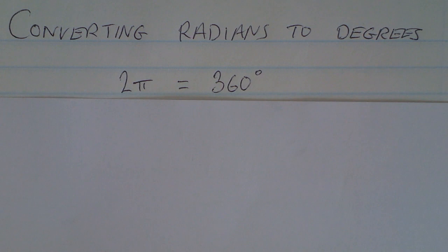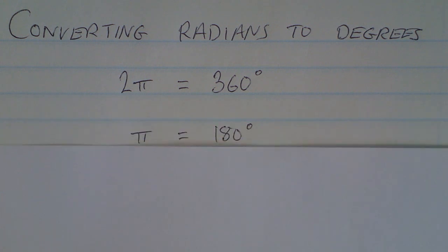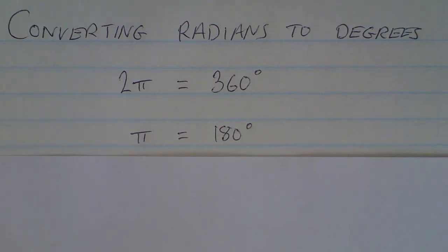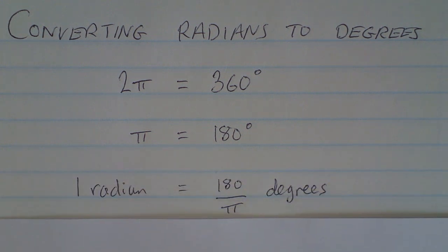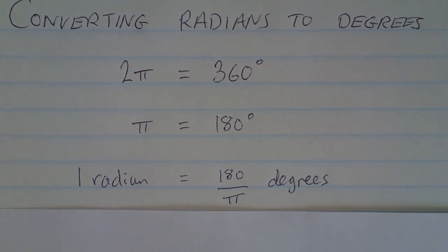As a reminder, we know that 2π radians is equivalent to 360 degrees, and therefore π is 180 degrees. That's π radians. So one radian equals 180 divided by π degrees.